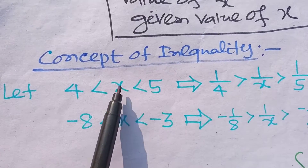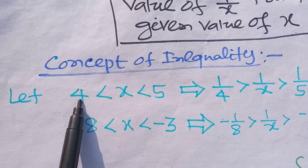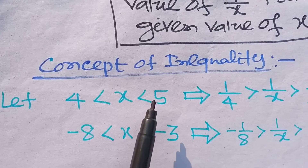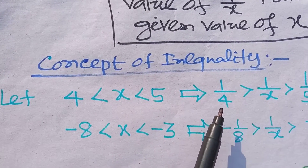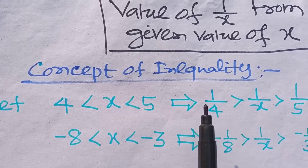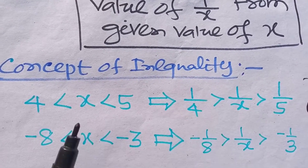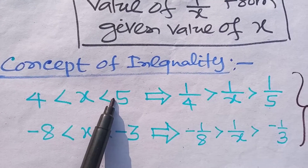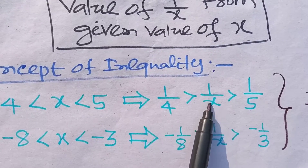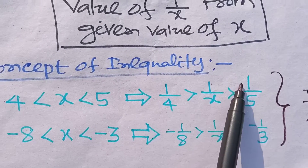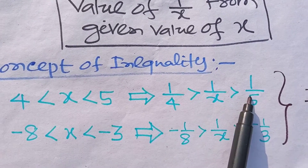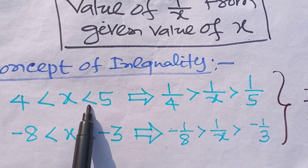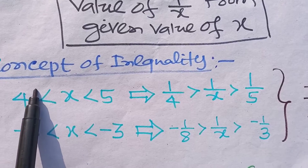Let's say x belongs from 4 to 5. Then we want to find out the interval where 1/x will belong. When x belongs to [4, 5], then 1/x will belong from 1/4 to 1/5. That means on taking the reciprocal, the sign of inequality changes — we have to just reverse the sign.